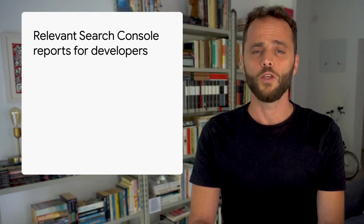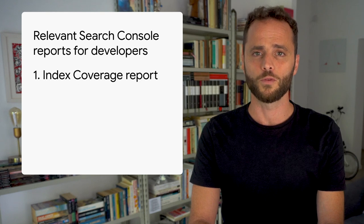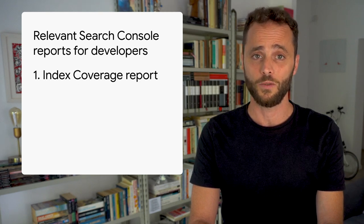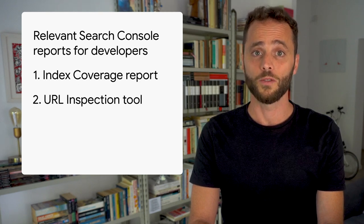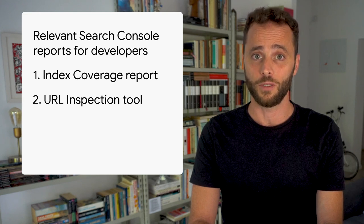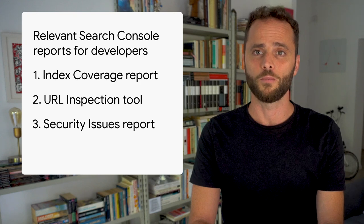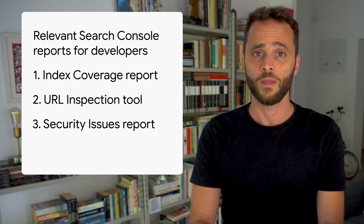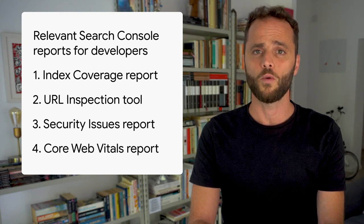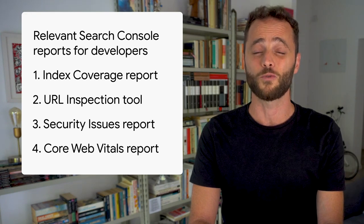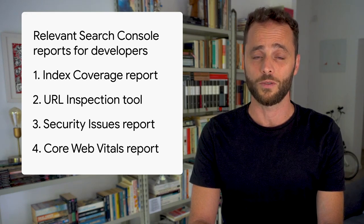In summary: use the index coverage report to understand site-wide search indexing issues; use the URL inspection tool to debug page-level search indexing issues; use the security issues report to find and fix issues affecting your site; and use the Core Web Vitals report to make sure your website provides a great page experience to your users.